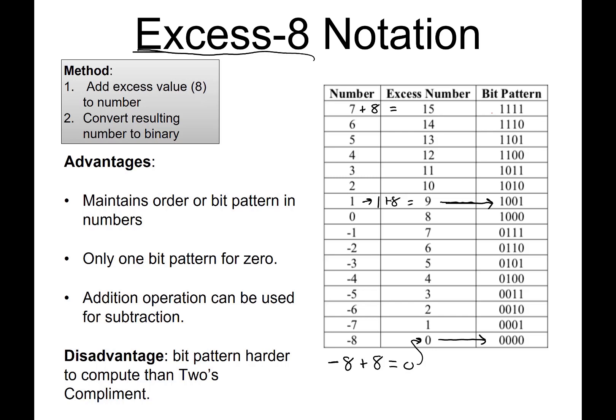Basically, all we're doing is, if we come over here to the method, we're adding 8 to the number. So whatever number we want to write in binary, we're adding 8 to that number, and then we're converting the result to binary.